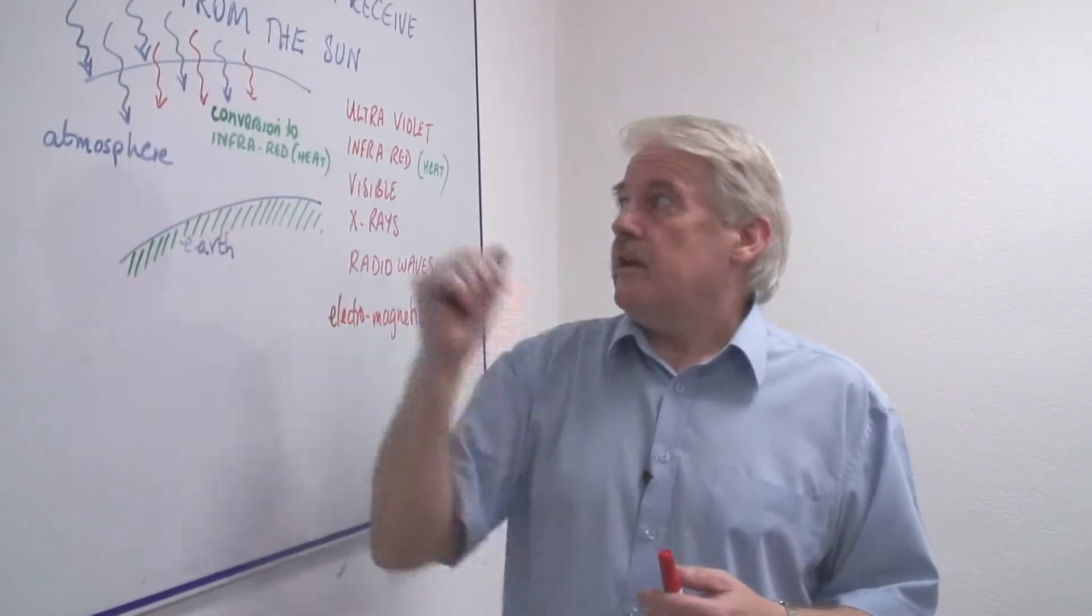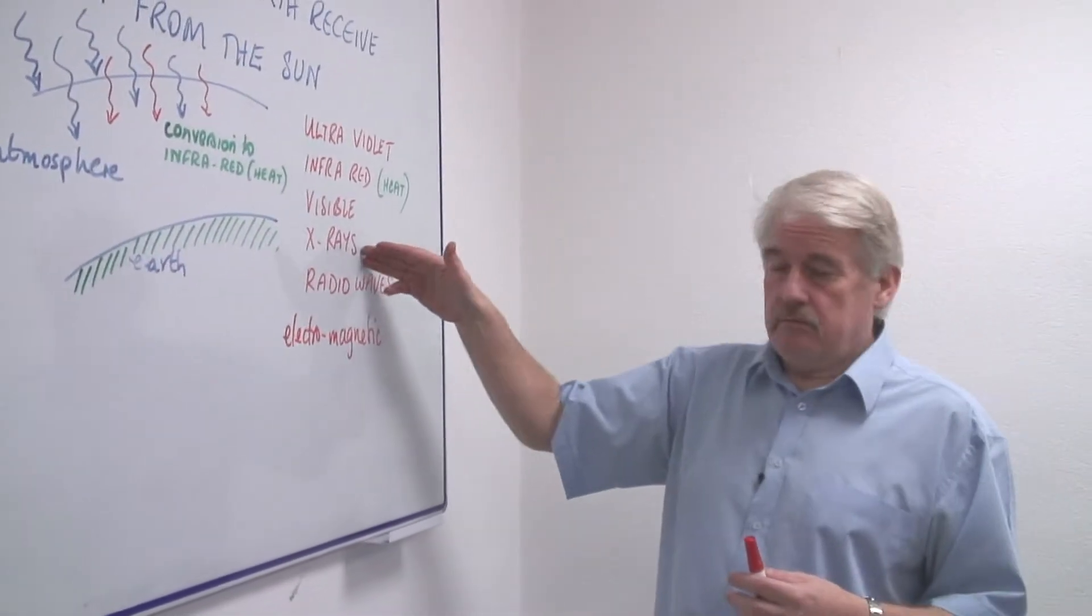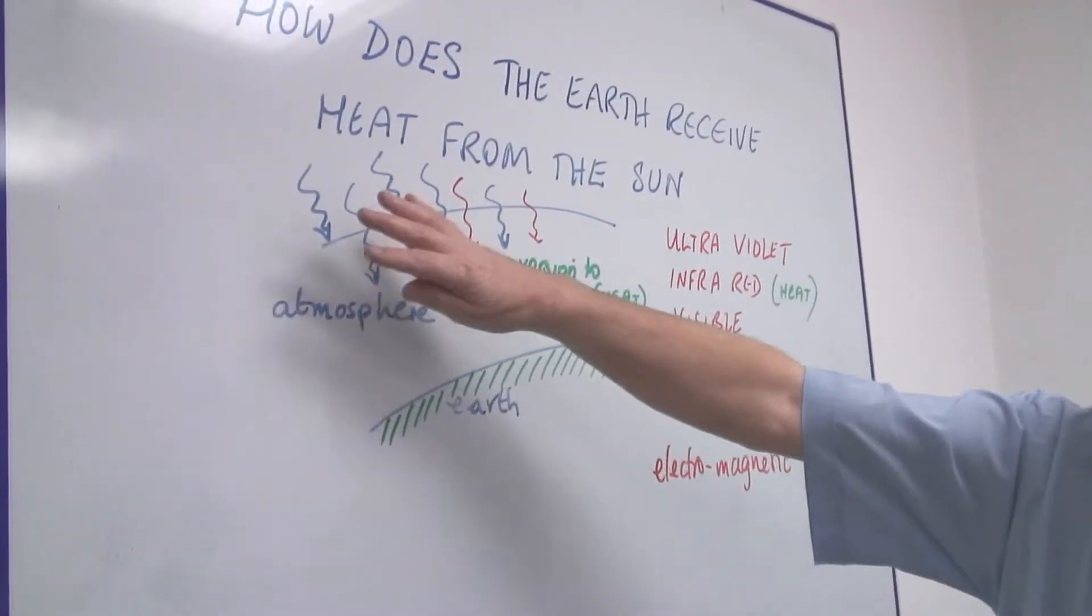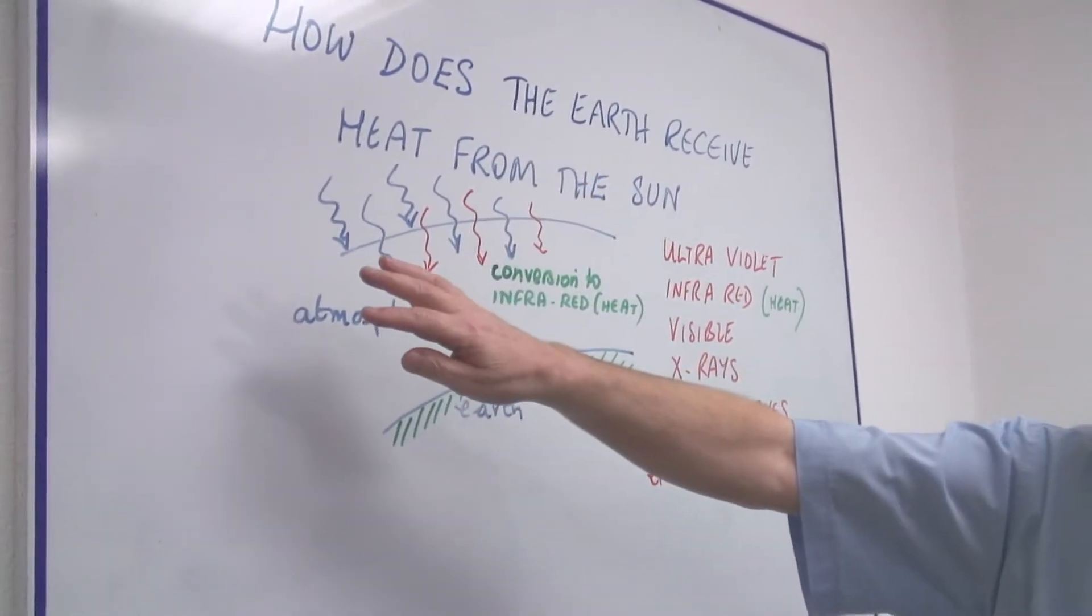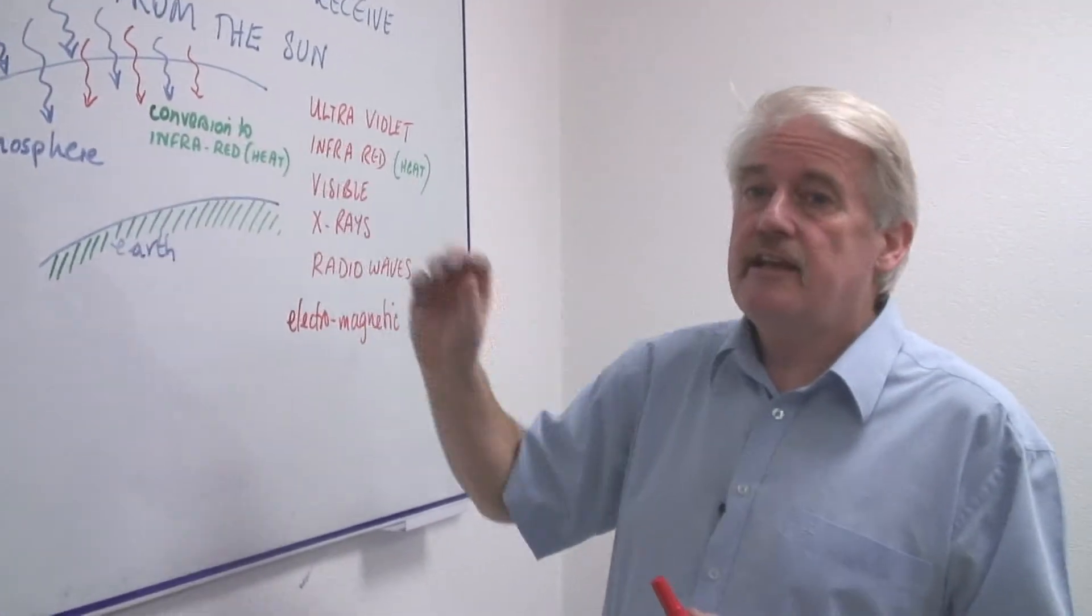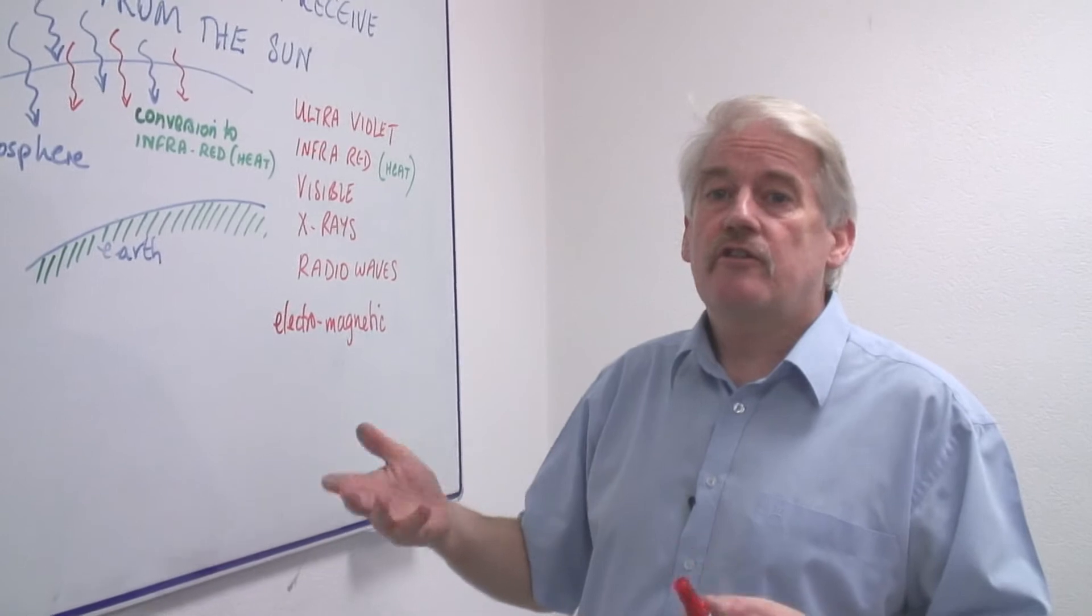So when the x-rays for example come from the sun, most of them don't get to us here on earth because they are absorbed in the upper layers of the atmosphere and are converted to other forms of radiation, particularly infrared, which means that the earth warms up.